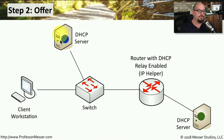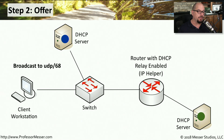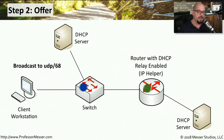Those DHCP servers will examine the request, and if they have an IP address that's available, they will make an offer to this client workstation using a broadcast to UDP port 68. Those broadcasts from both DHCP servers will be seen by the original client workstation.